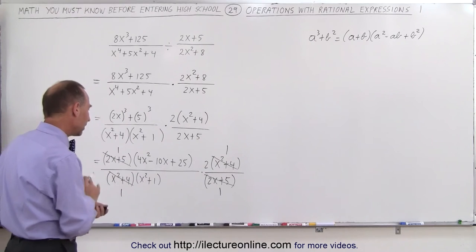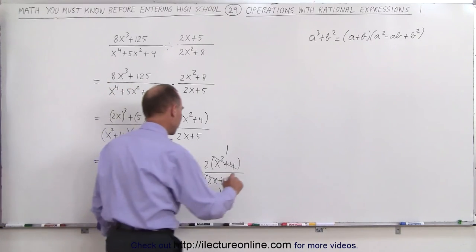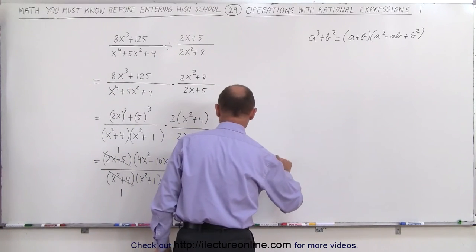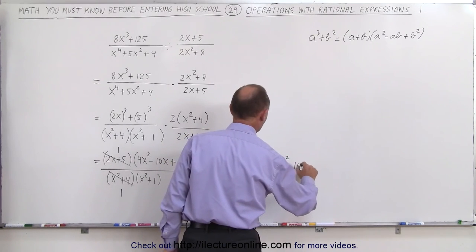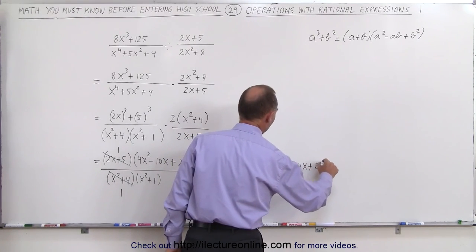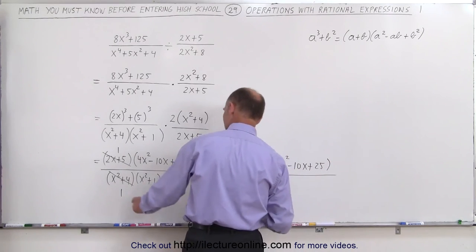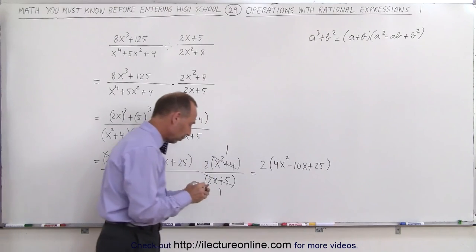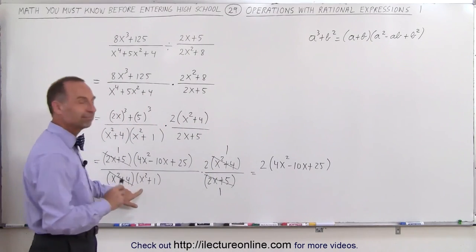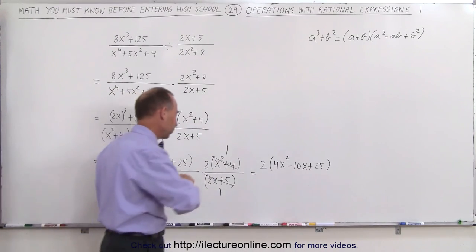And it looks like that's about all we can simplify. So in the end, this becomes 2 times 4x squared minus 10x plus 25, all divided by 1 times 1. 1, well, we don't have to put anything in the denominator. Oh, yes, I forgot.